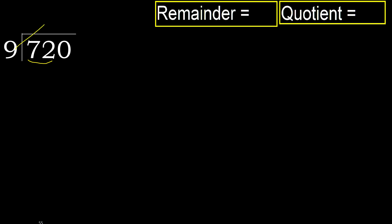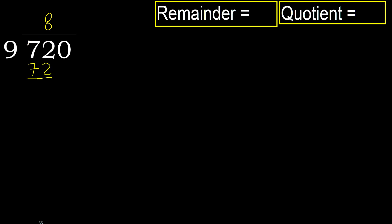9 multiplied by which number is nearest to 72 but not greater? 9 multiplied by 9 is greater, multiply by 8: 72. That is not greater. Ok, subtract: 72 minus 72 equals 0.